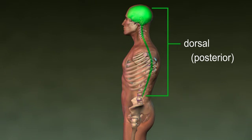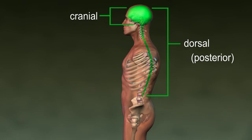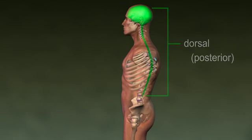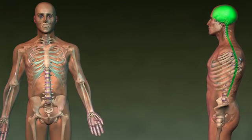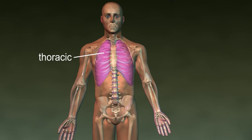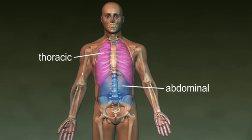There are two main body cavities: the dorsal cavity, near the posterior surface of the body, and the ventral cavity, located in the anterior part of the body. The dorsal cavity contains organs of the nervous system and is divided into two portions: the cranial cavity and the spinal cavity. The ventral cavity is divided into the thoracic cavity, the abdominal cavity, and the pelvic cavity.